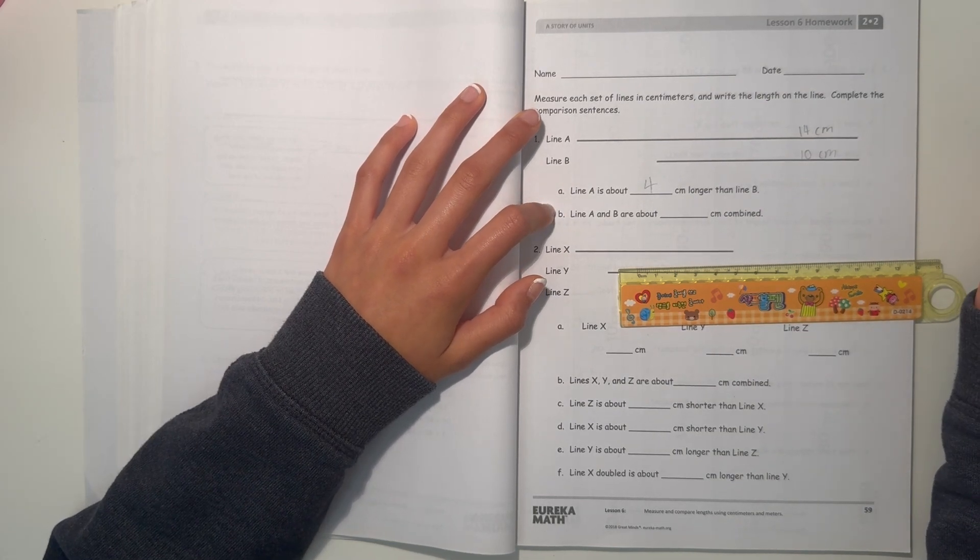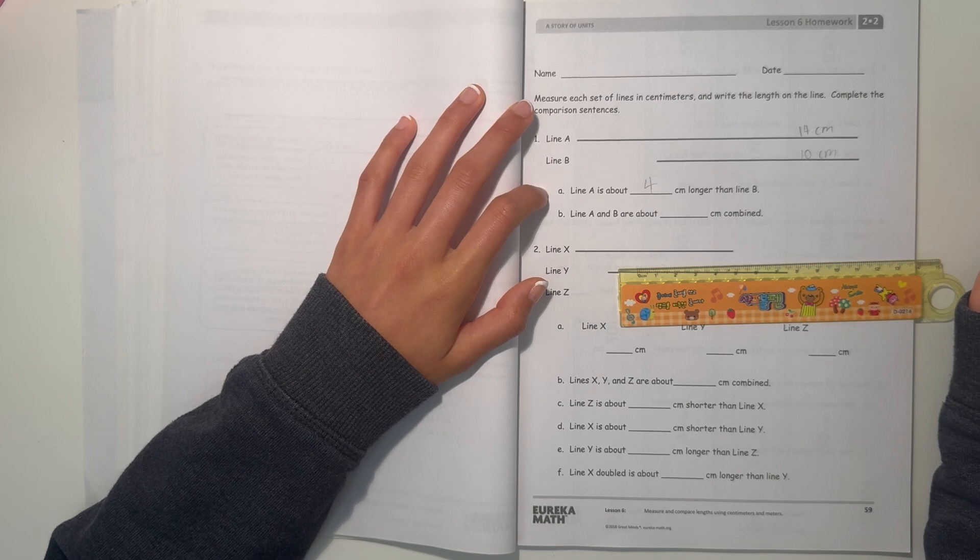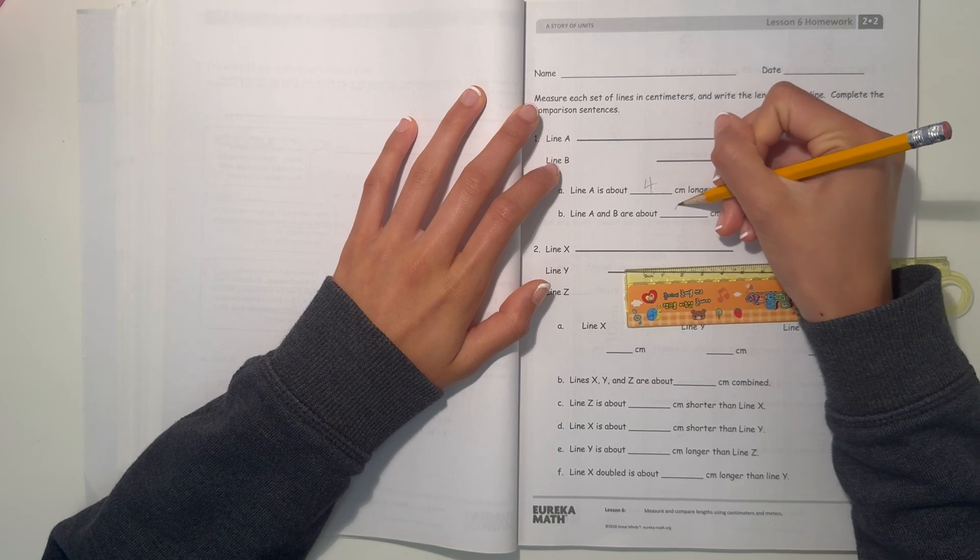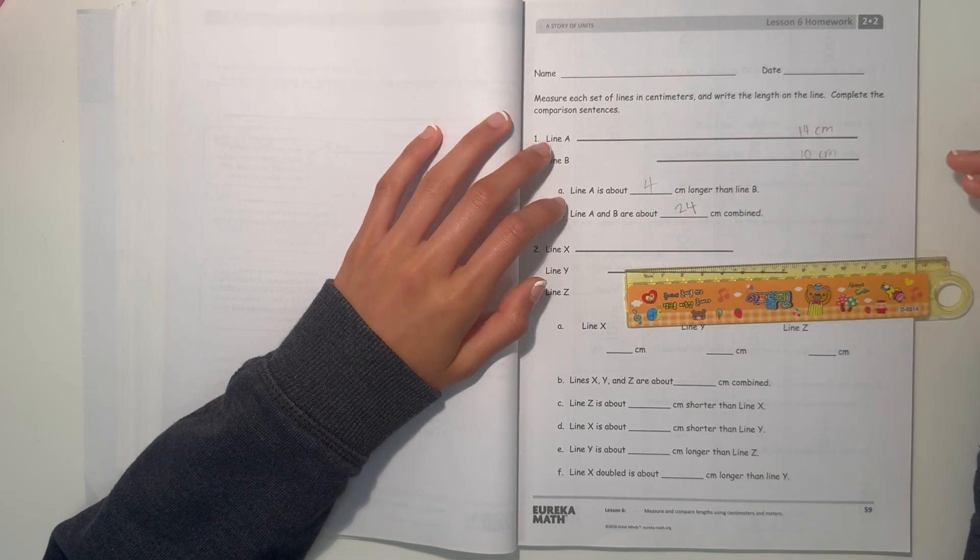Now so line A and B are about blank centimeters combined. 14 plus 10, and when we're here, that's 24. So it's about 24 centimeters combined.